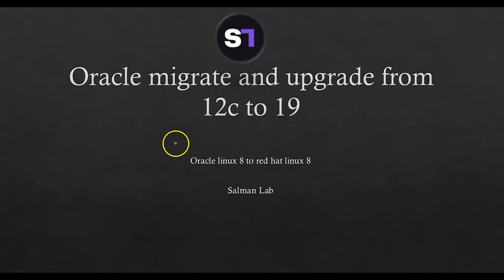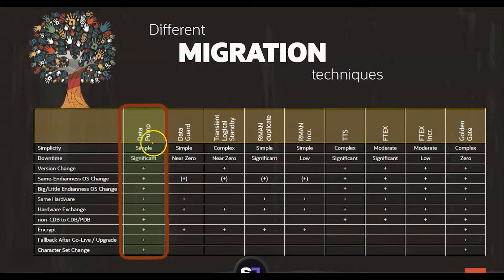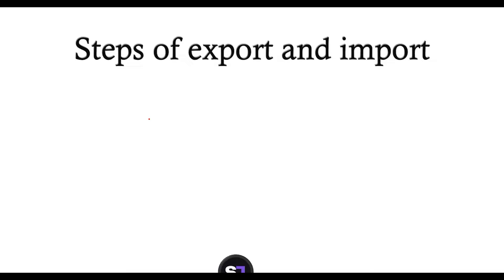Welcome to Selman lab. In this lab we are going to cover one more topic as part of Oracle migration and upgrading from 12c to 19c, OS from Oracle Linux 8 to Red Hat Linux 8. We are going to cover Data Pump. It's very simple, however downtime will be significant because we have to stop all applications to the current database, then take a full export of all schemas. Users are migrated to the new database, but it will cover all kinds of differences — corruption, hardware change, anything — with Data Pump. Let's see the steps of export and import.